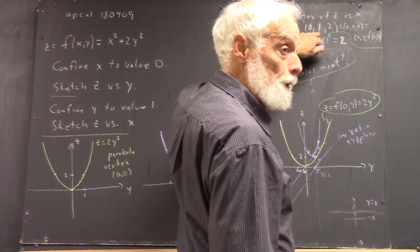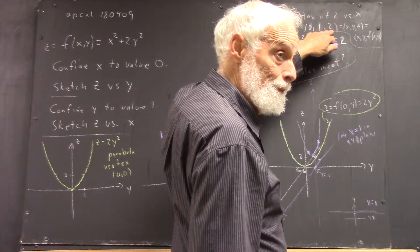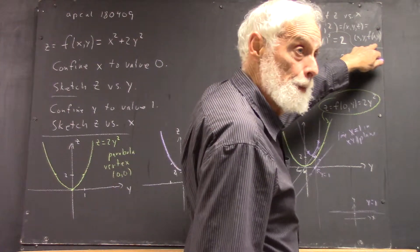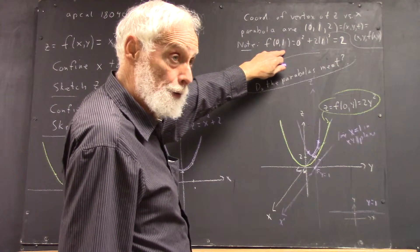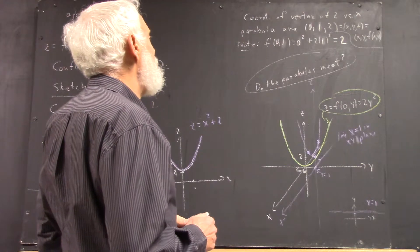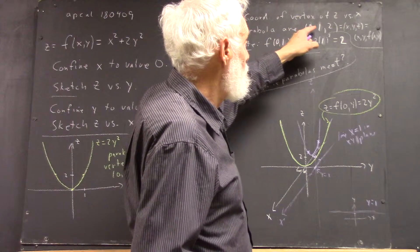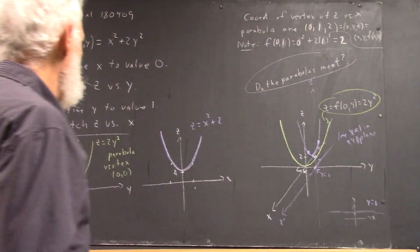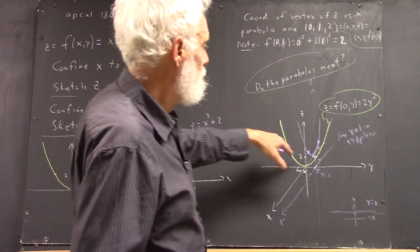For x equals zero, y equals one, this is the point x, y, z, where z is f of x, y. And to calculate it, we just plug the x and y values in and we get them, right? So now my question is, is this point zero, one, two also on this graph?